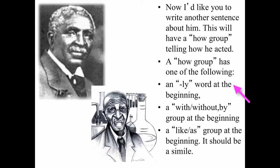You create a how group by beginning with an LY word — that's usually an adverb — or a group of words that starts with 'with,' 'without,' or 'by.' You can even make an analogy where the group of words starts with 'like' or 'as.' So you begin your how group with an LY word like 'carefully' or 'occasionally,' or with the words 'with,' 'without,' or 'by,' or 'like' or 'as.' All of those are great ways to begin your sentences. And like everything else, when the how group comes at the beginning of the sentence, you follow it with a comma.